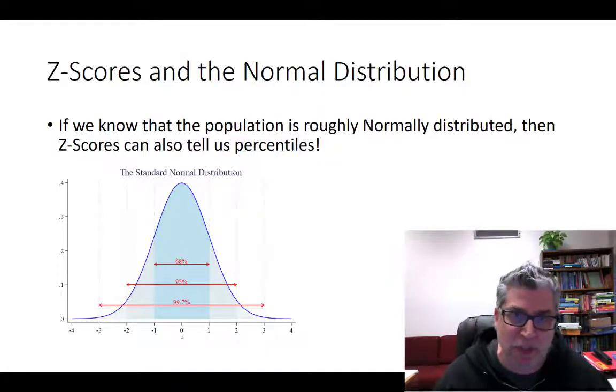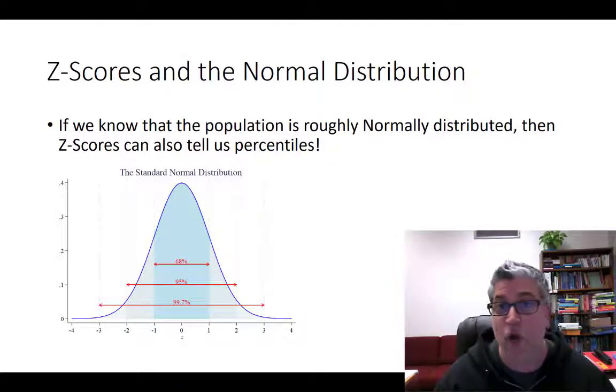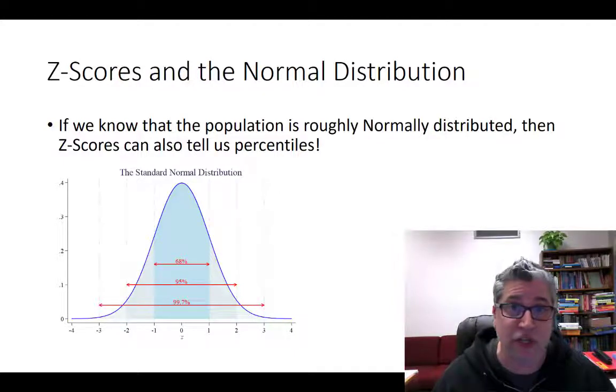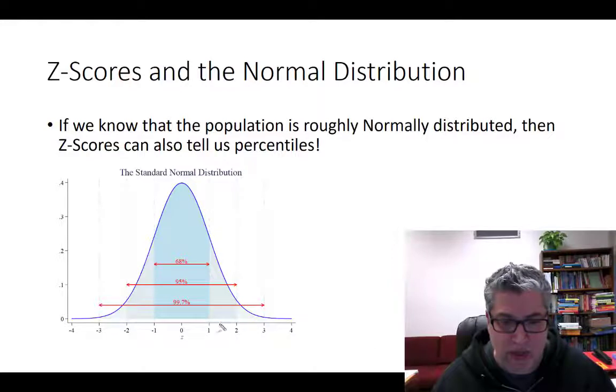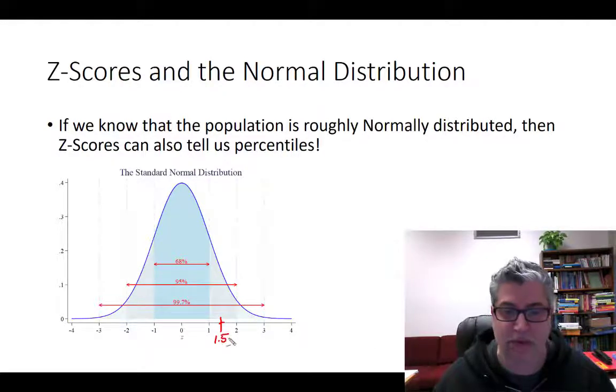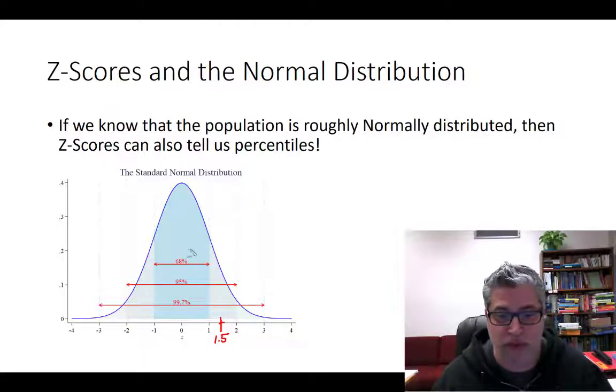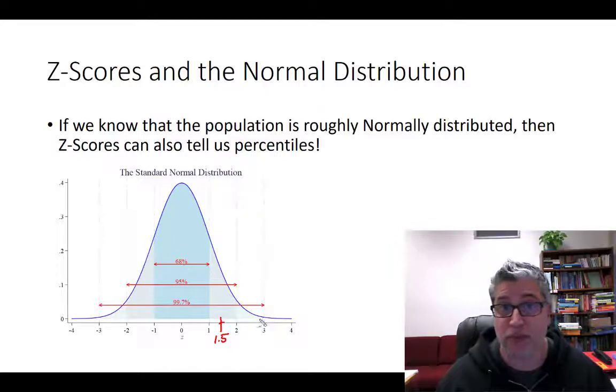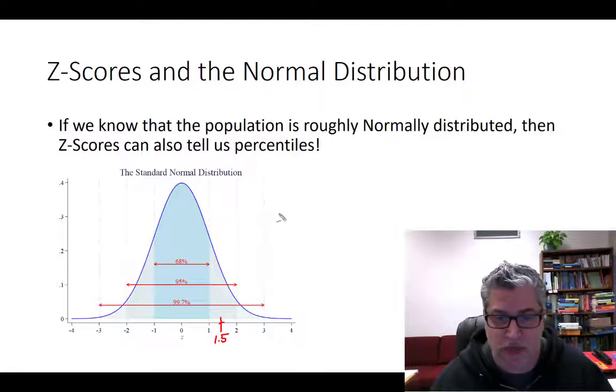So, in the example we just did, you scored 1.5 standard deviations better than average. So, what would your percentile be? Now, without looking at a table, we want to be able to estimate percentiles. We can use the empirical rule, right? So, we know something about how standard deviations are related to percentages from the empirical rule. So, let me draw out what the plan of attack is.